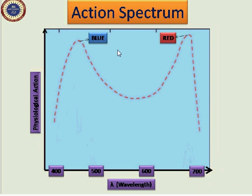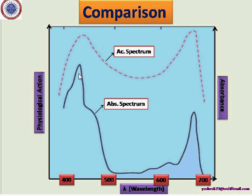Similarly, we can plot a spectrum of activity at a particular wavelength. When we plot the physiological response against the visible range of light, we find that maximum activity is obtained in the blue and red regions. Comparing these two graphs, it is quite evident that absorption and action have the same peak in the blue and red regions, indicating that blue and red light absorption is responsible for the particular physiological action governed by light energy.